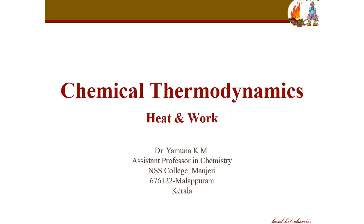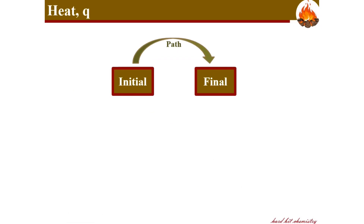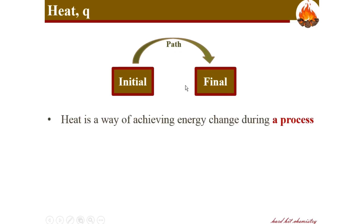Friends, here we go on with chemical thermodynamics. In this part, we will discuss the two fundamental aspects of thermodynamics: heat and work. Heat is represented by the letter Q and it is associated in a process when the system moves from its initial set of conditions to a set of final conditions through a certain path. Heat can be one form of energy change occurring in the process.